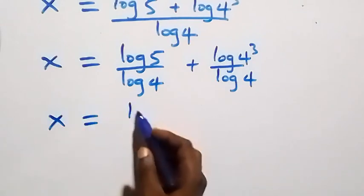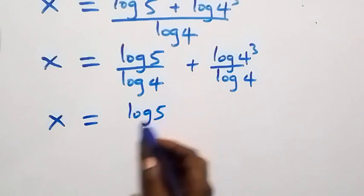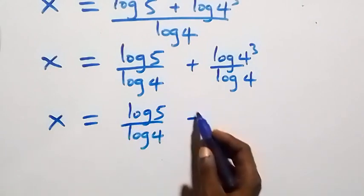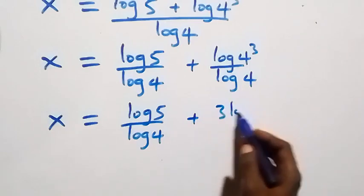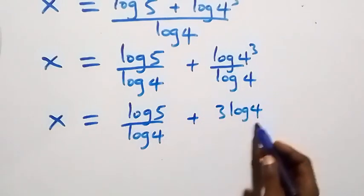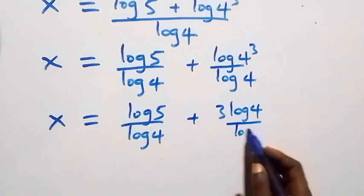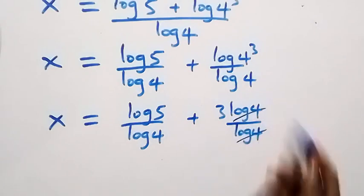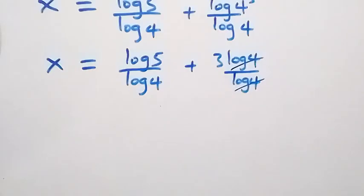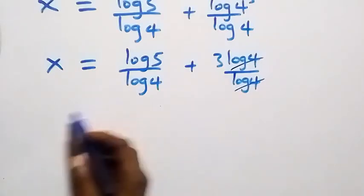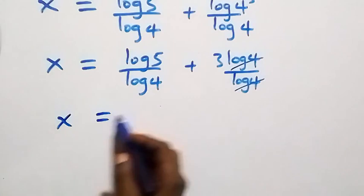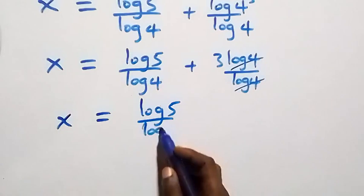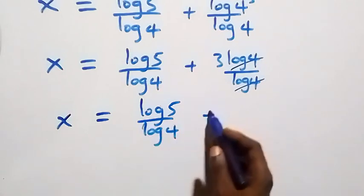After simplification, log 4 over log 4 cancels, and we have x equals log 5 over log 4, plus 3.